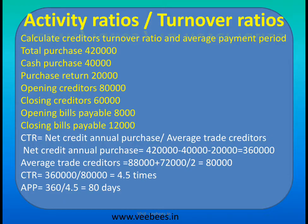Therefore, creditors turnover ratio equals 3,60,000 divided by 80,000, which equals 4.5 times.